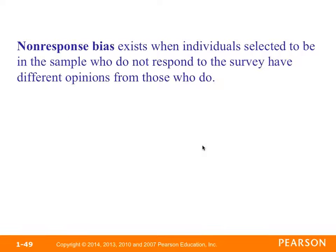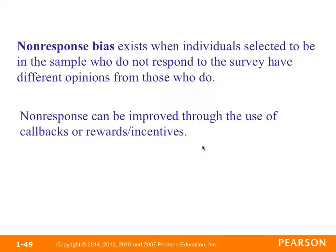Non-response bias exists when an individual selected to be in the sample does not respond to the survey and has a different opinion from those who do. If it's a touchy subject, individuals with an unpopular opinion might not be as likely to respond. Non-response can be improved through the use of callbacks or rewards and incentives — continually calling people back or offering some kind of reward for responding.